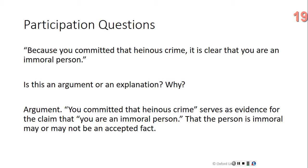Let's review what we've gone over. We've seen that arguments are just one of many ways to use language. We need to be able to distinguish arguments from these other uses of language if we're going to be fluent in identifying arguments in passages. In particular, it's difficult to distinguish between arguments and explanations. A rule of thumb for making the distinction is this: in an argument, the conclusion is typically not an accepted fact, while the premises are. In an explanation, the thing being explained is typically an accepted fact. That's all I have for today.